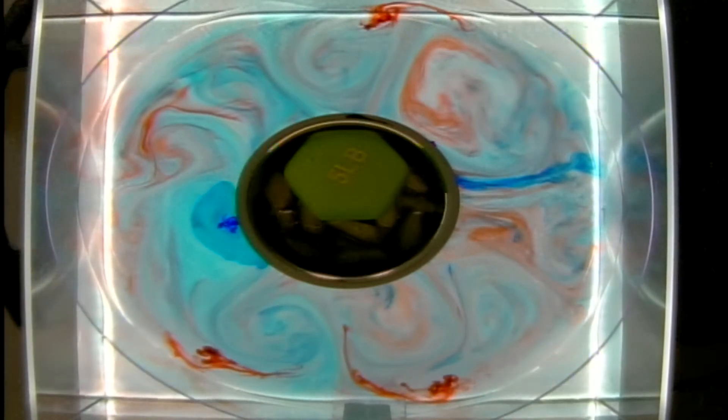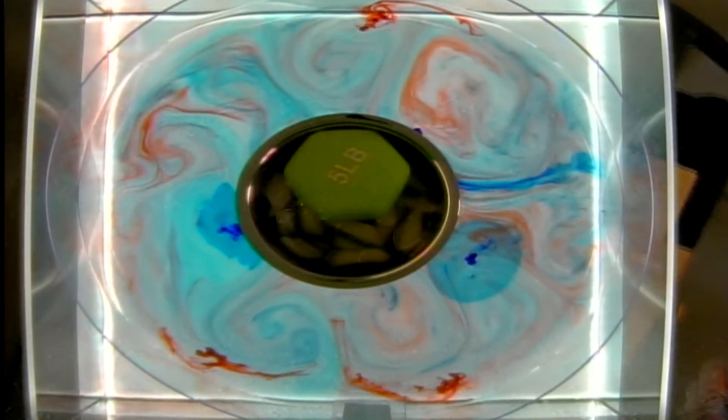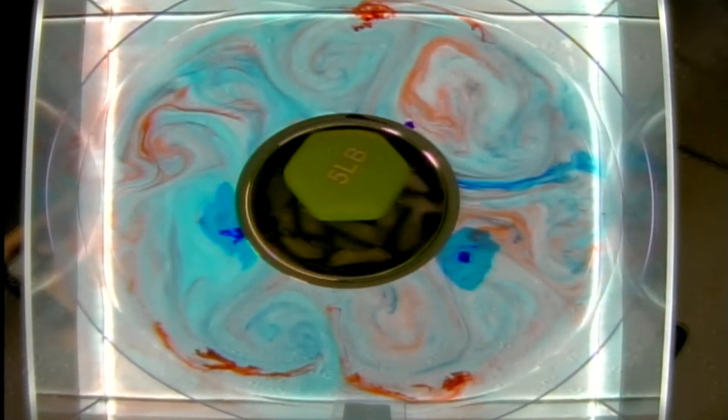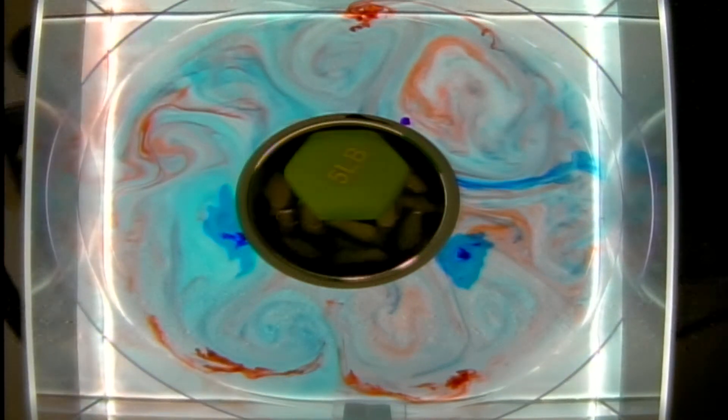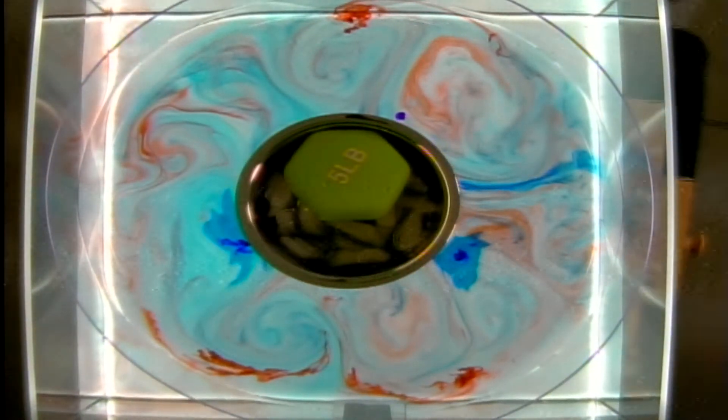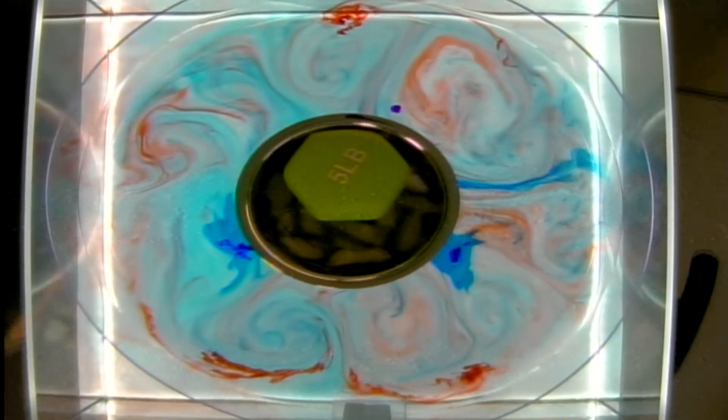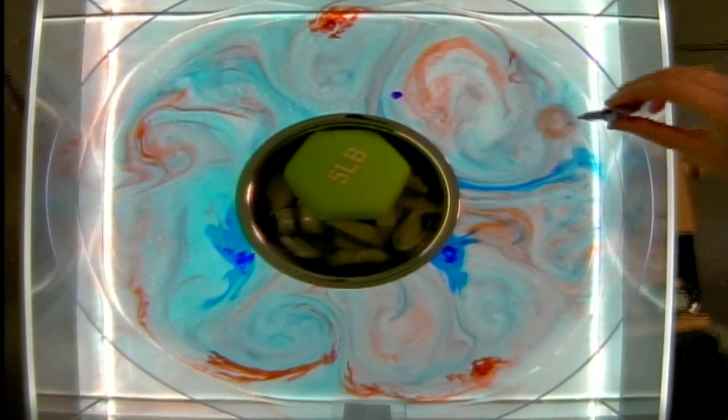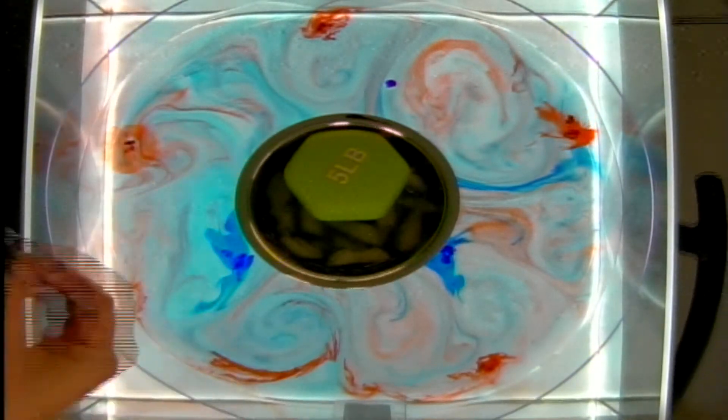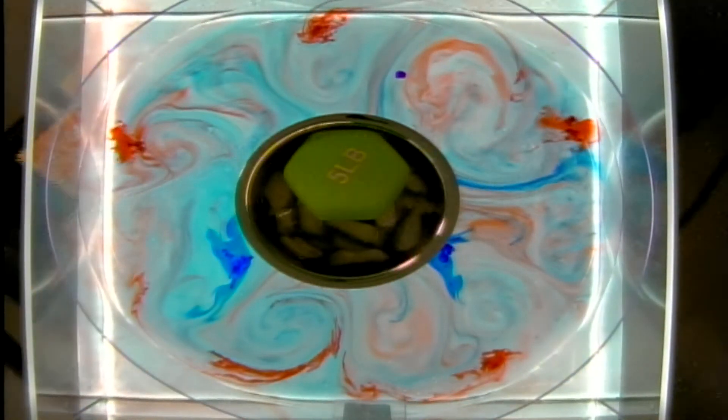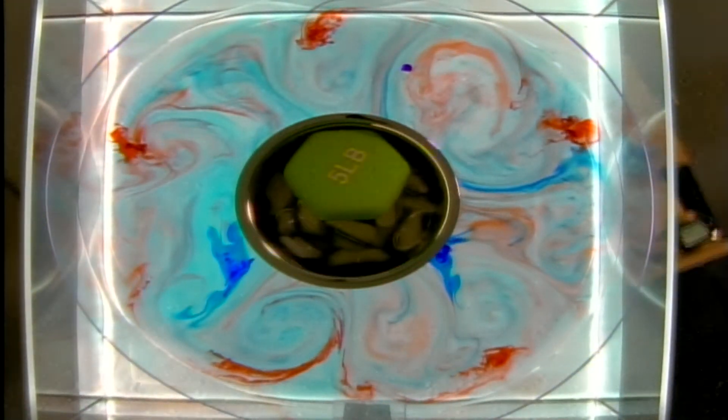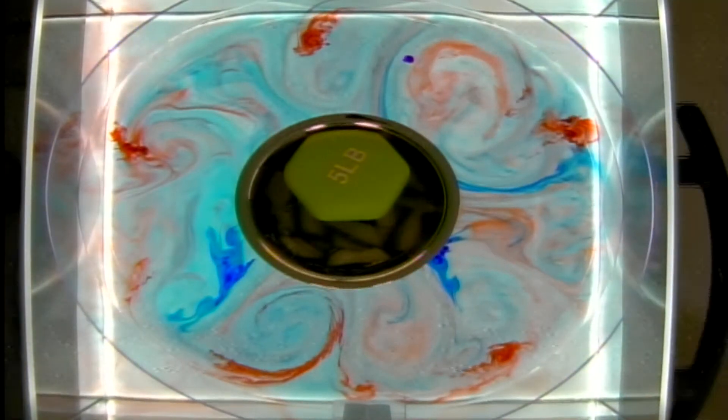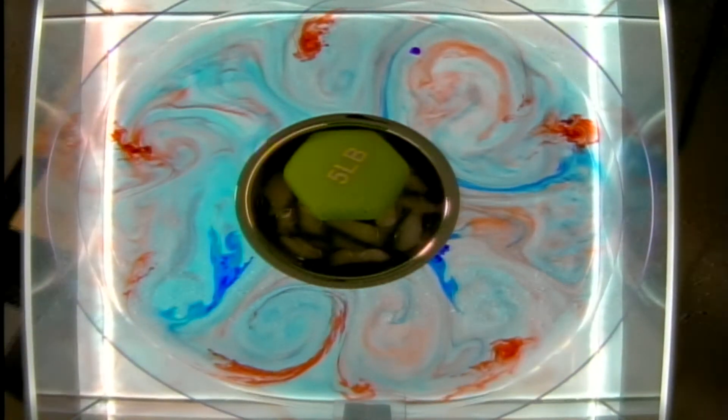When those two waves on the top and bottom boundary are in the right configuration and propagating in opposite directions, they can phase lock with each other and then mutually amplify, causing growth of disturbances and an instability. That gives rise to the weather systems on Earth as well as these spiraling eddies here in our tank experiment.